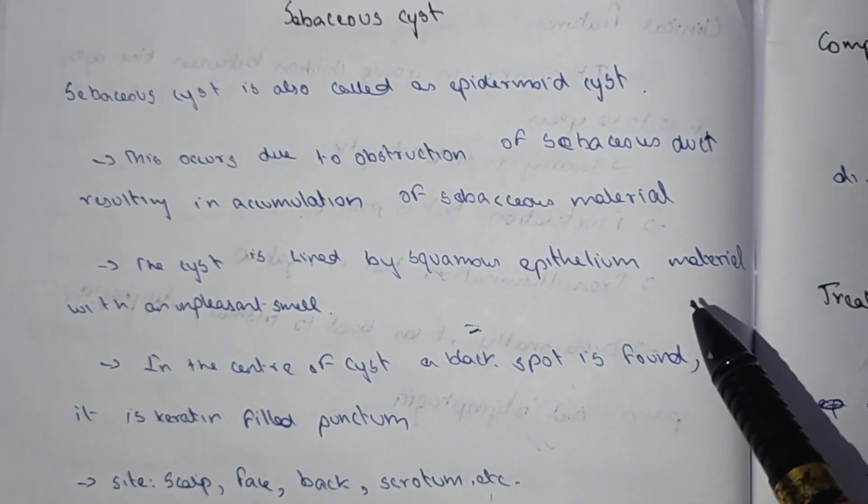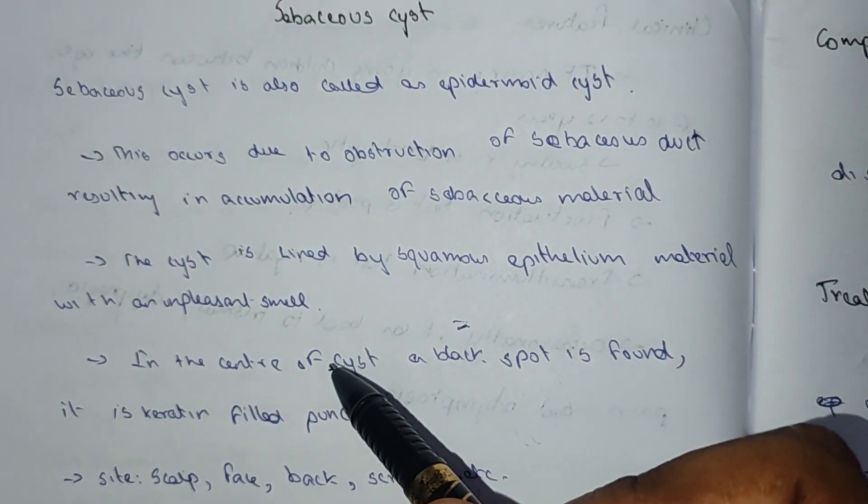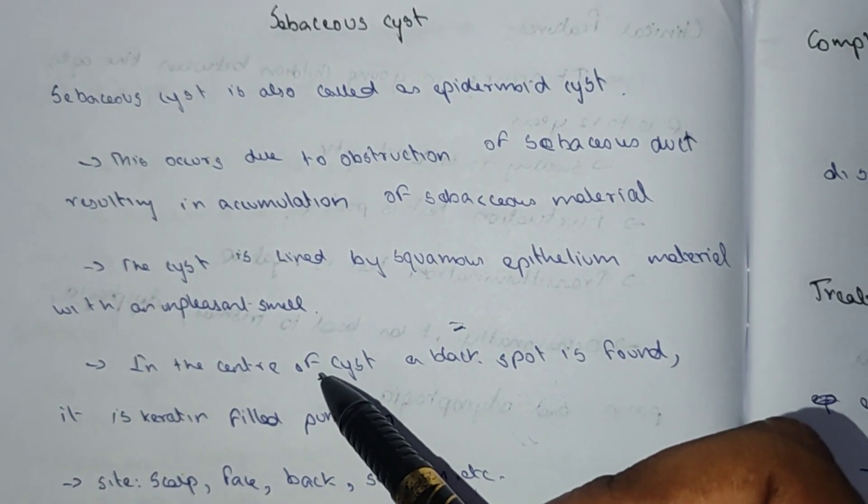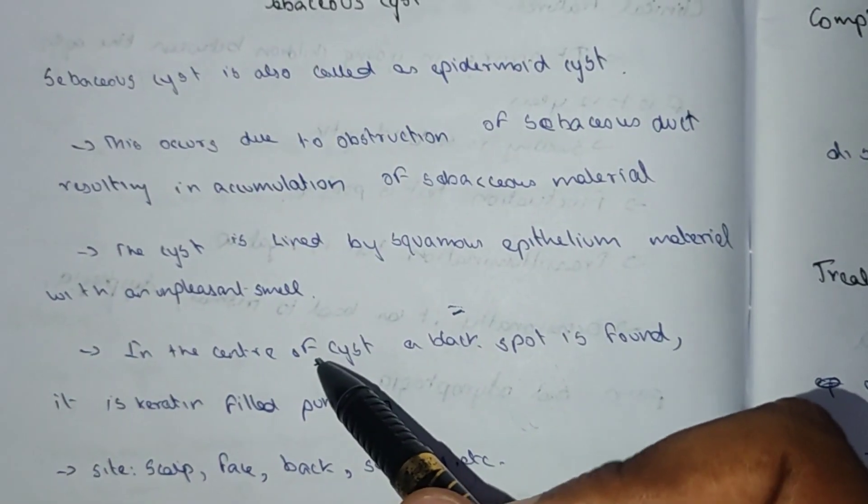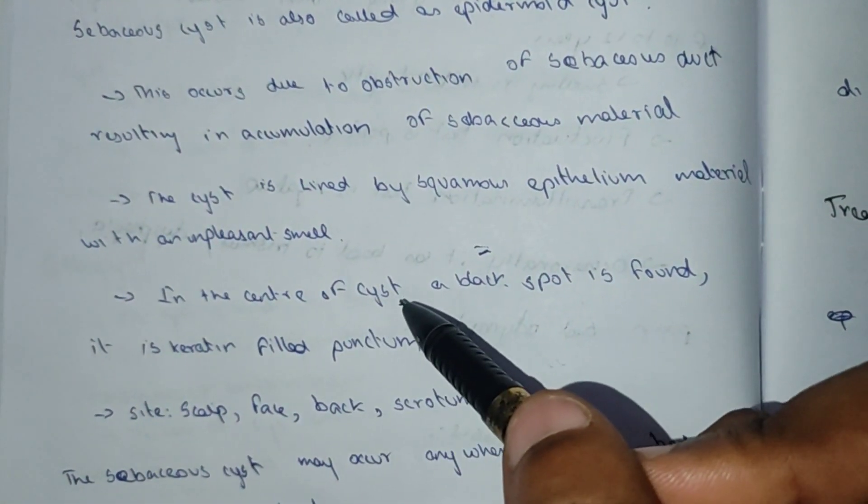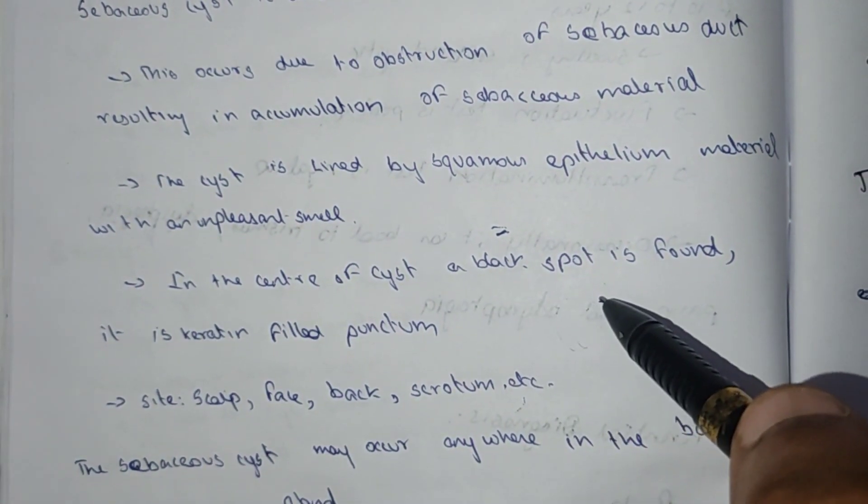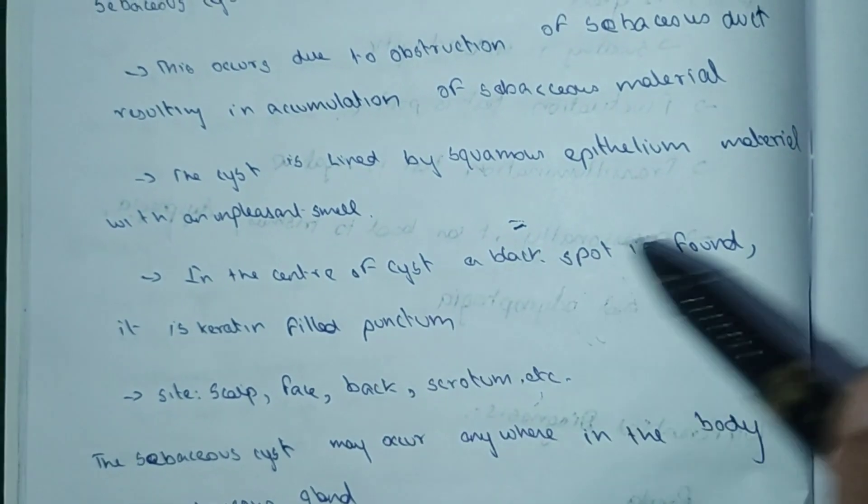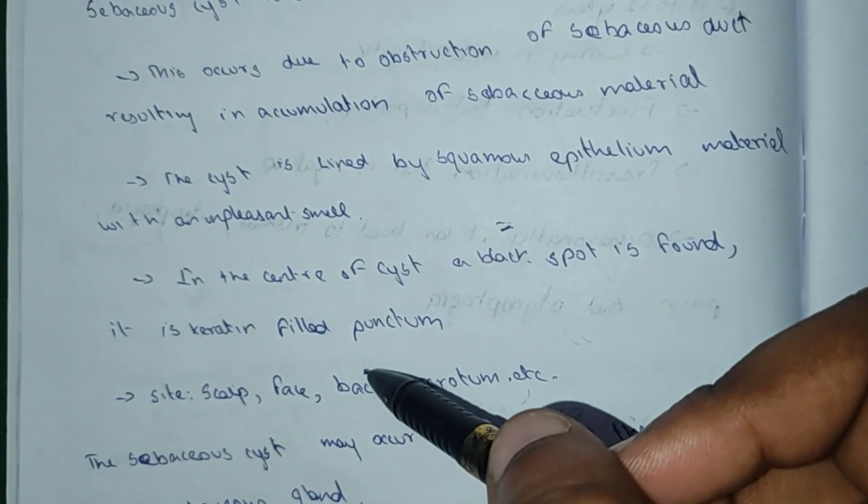The cyst is lined by squamous epithelium material with unpleasant smell. In the center of the cyst there is a black spot which is a keratin filled punctum.